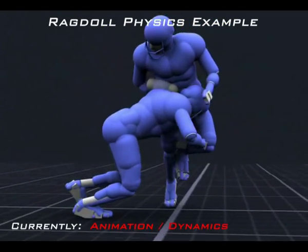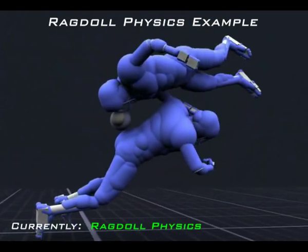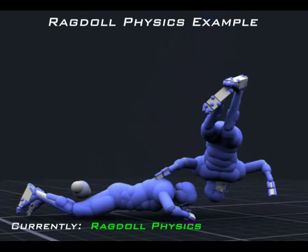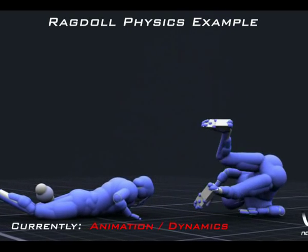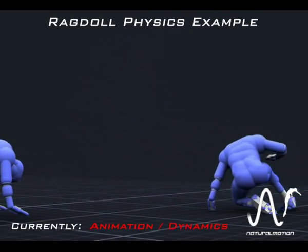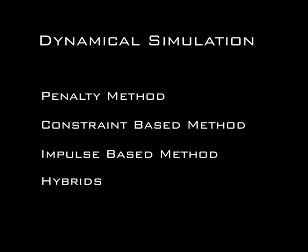Here's an example of collision detection that uses both animation and ragdoll physics. There are several different ways that physics engines simulate dynamics. The first is called the penalty method, in which interactions or collisions are treated as springs.